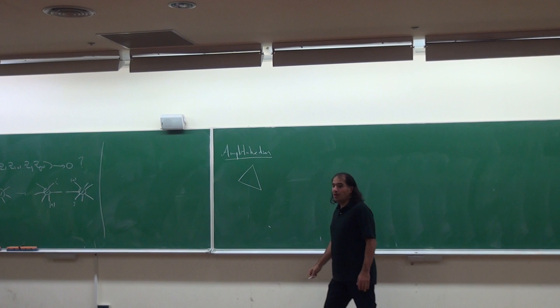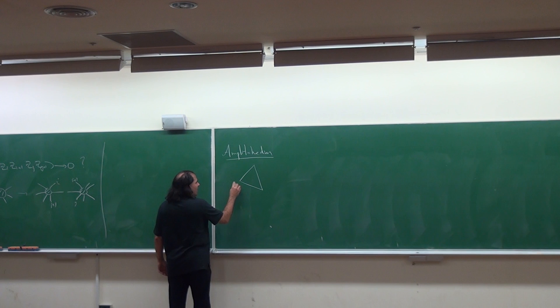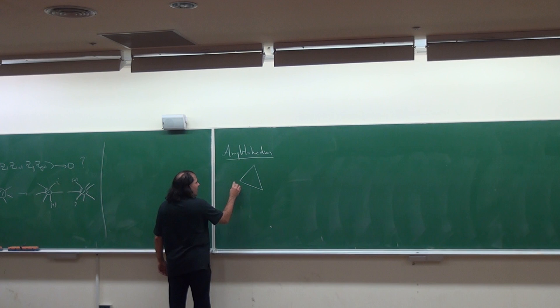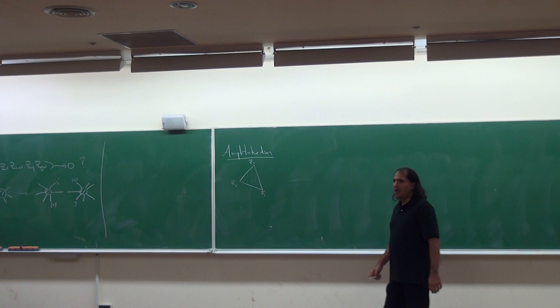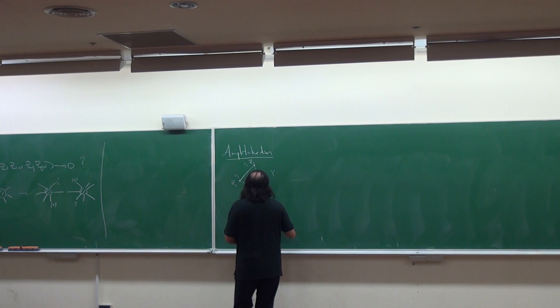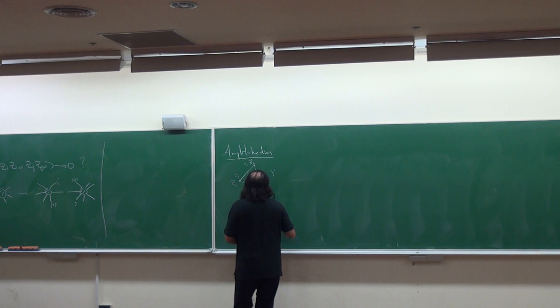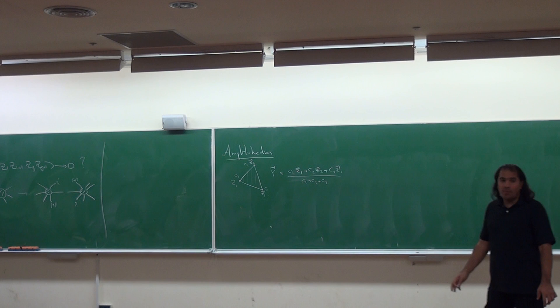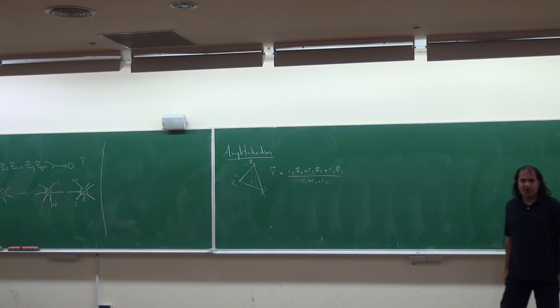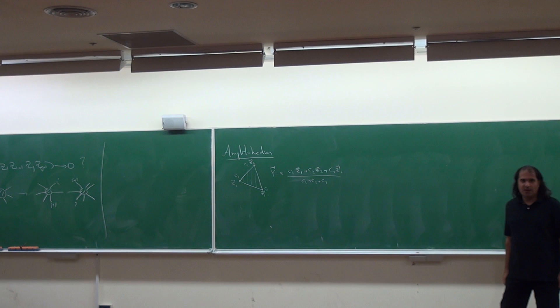Now let's forget about the physics and define the amplituhedron itself. Everything begins with a triangle. Imagine vertices at z_1, z_2, z_3. To describe all points on the inside of the triangle, imagine these vertices have masses c_1, c_2, c_3. All such points for all possible values sweep out the inside of the triangle - that's the center of mass idea.